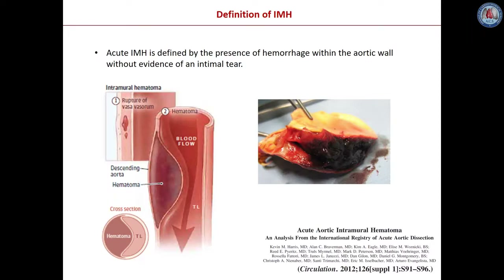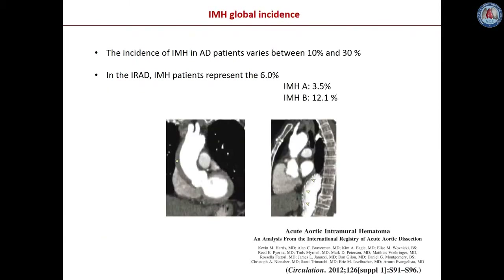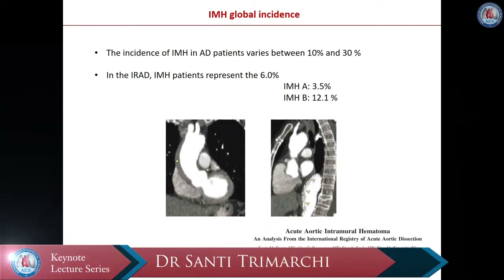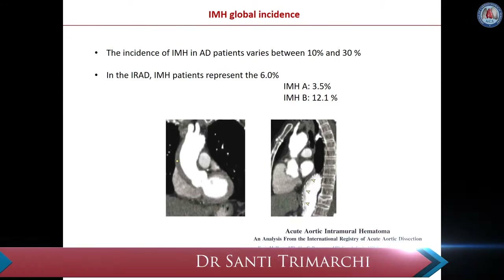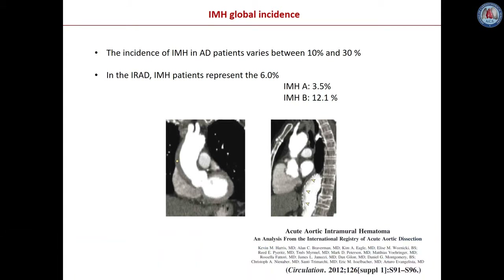An acute aortic intramural hematoma is defined by the presence of hemorrhage within the aortic wall without evidence of intimal tear. This aortic injury may evolve into aortic dissection or rupture and therefore is considered a lethal condition and an acute aortic syndrome. The incidence of intramural hematoma in patients affected by aortic dissection varies between 10 and 30 percent. However, in the largest series, based on the International Registry of Acute Aortic Dissection, the IRAD, the overall incidence of intramural hematoma among all dissections was 6 percent.